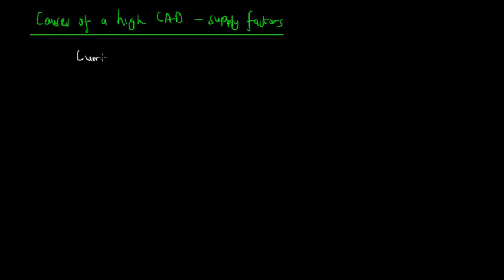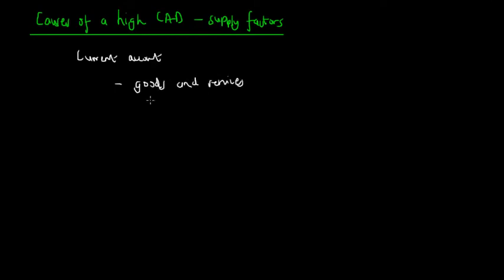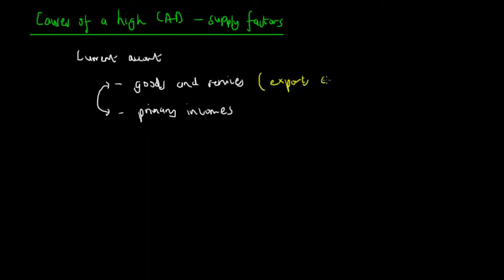The current account can be broken up into two separate categories for the purposes of analysis: goods and services. The current account consists of goods and services as well as primary incomes. We're going to neglect secondary incomes because it represents a very small proportion of the current account and may not put the current account into deficit as much as these two accounts would. So we're going to see how supply side factors can affect the balance on goods and services, which consists of exports and imports.